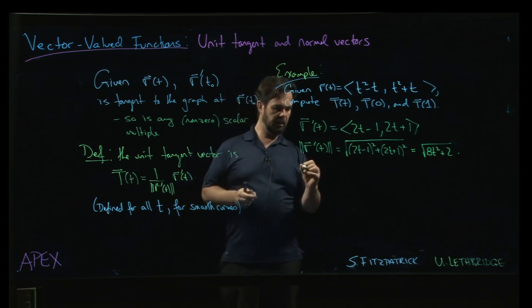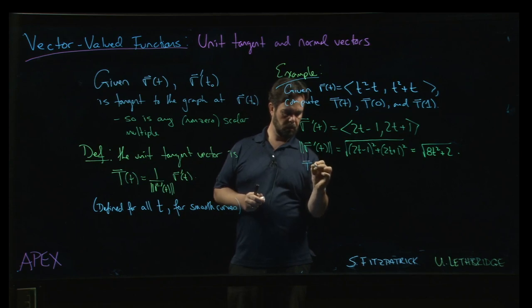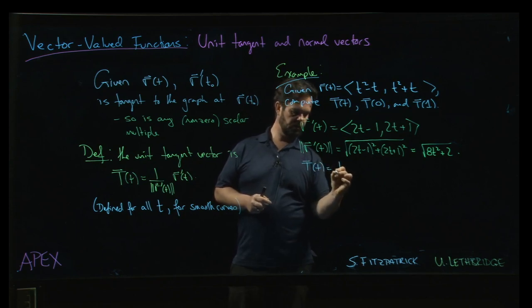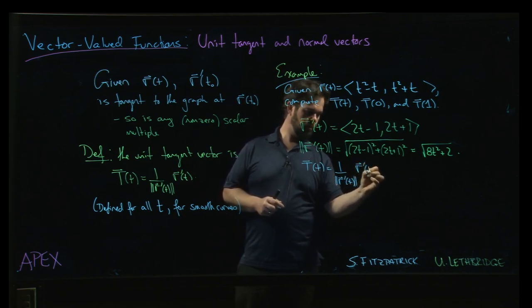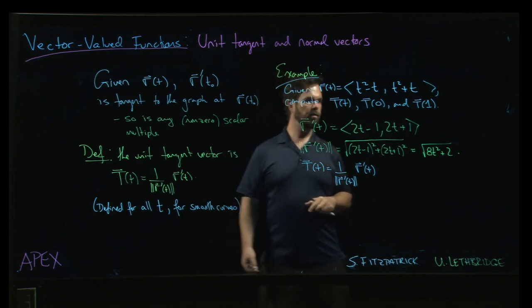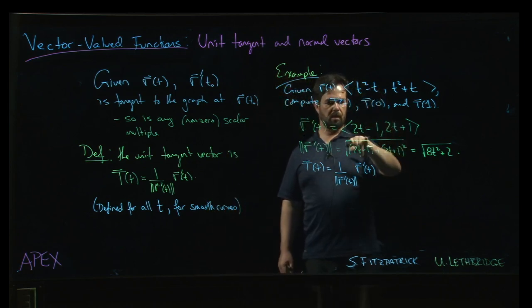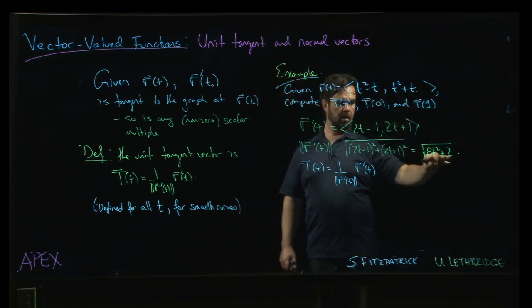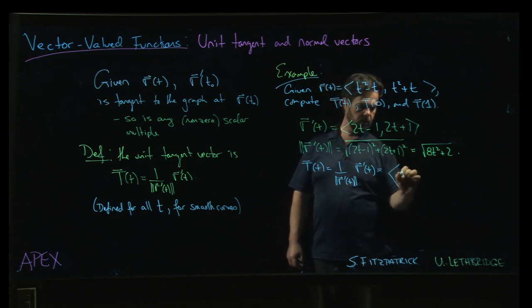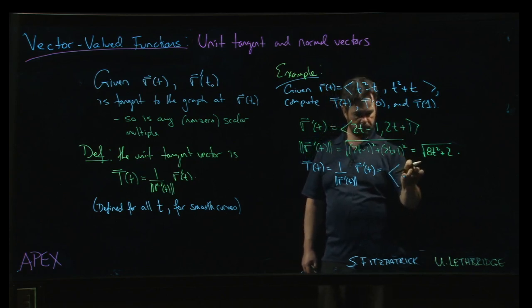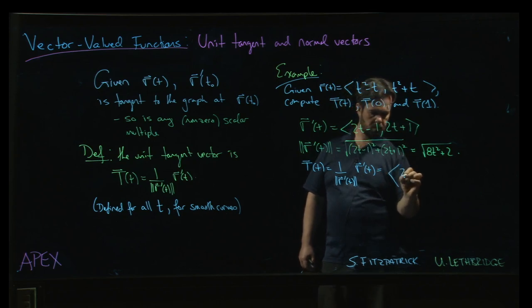Same idea though. So, we can now calculate the unit tangent vector. It's still 1 over the magnitude of r prime times r prime. So, we just have to take both components of r prime, divide by the magnitude. So, we're going to have 2t minus 1 over...